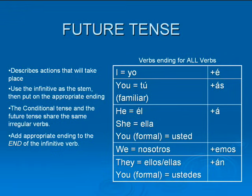Okay, the future tense. It's used to describe actions that will take place. Now, unlike the present and the preterite where you remove the ER, AR, and IR, with the future tense you leave the verb intact and then you add on the appropriate ending. These are the verb endings for all verbs. There are only 13 irregular verbs in the future tense.